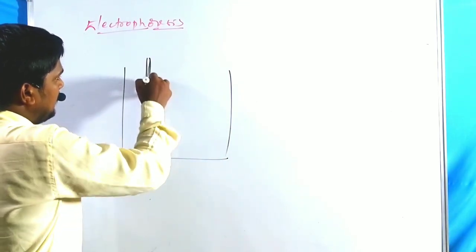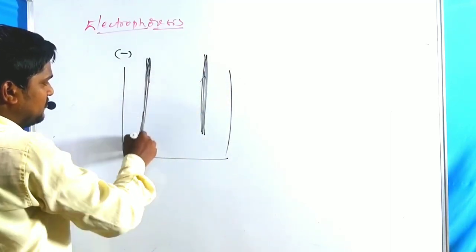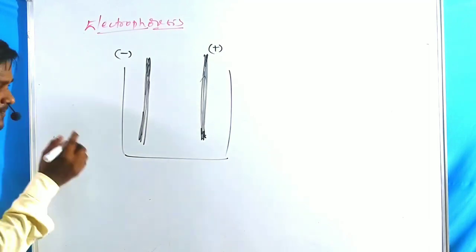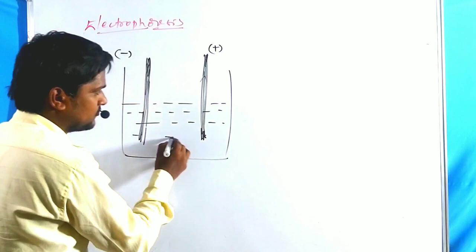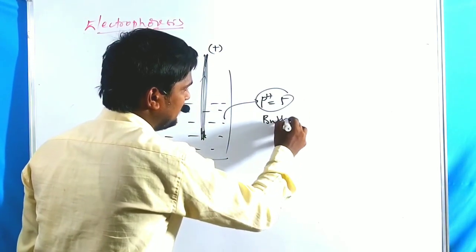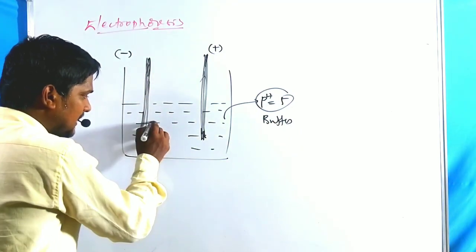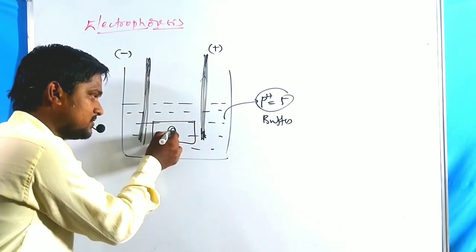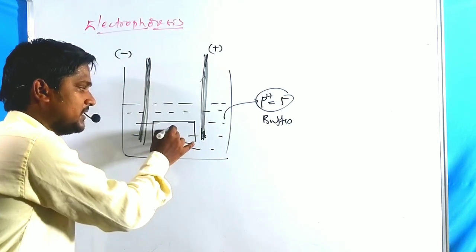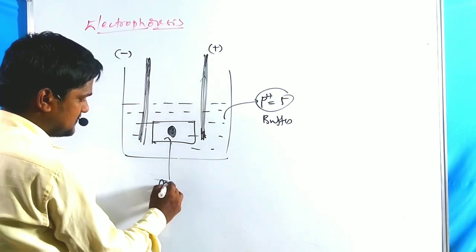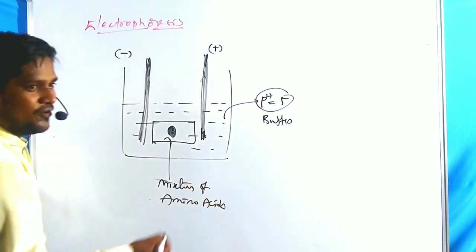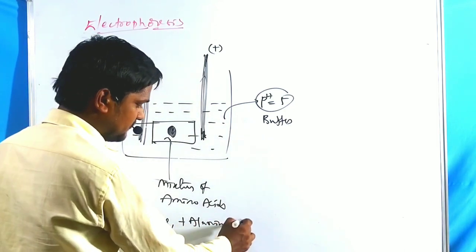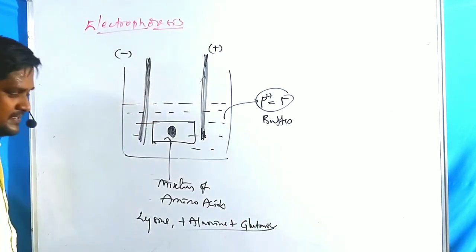Let us set up the electrophoresis: a negatively charged electrode on one side and a positively charged electrode on the other. We use a buffer solution at pH 5 (acetate buffer) and a cellulose acetate strip. We place a mixture of amino acids on the strip — for example, lysine (basic), alanine (neutral), and glutamic acid (acidic).